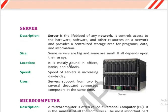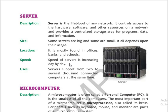Moving to the next type: server. You've heard this word — our internet service providers and telecom departments often say 'server is down.' A server is a main system which controls other systems. It is the lifeblood of any network. If the server shuts down, every system will shut down. It controls access to hardware, software, and other resources on a network, and provides a centralized storage area for programs, data, and information.